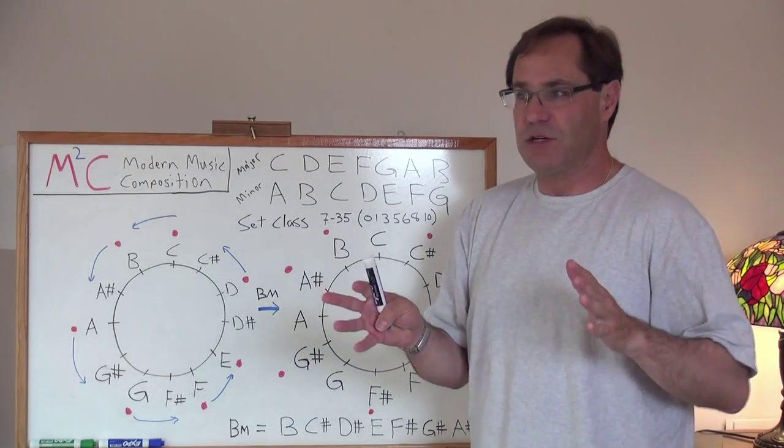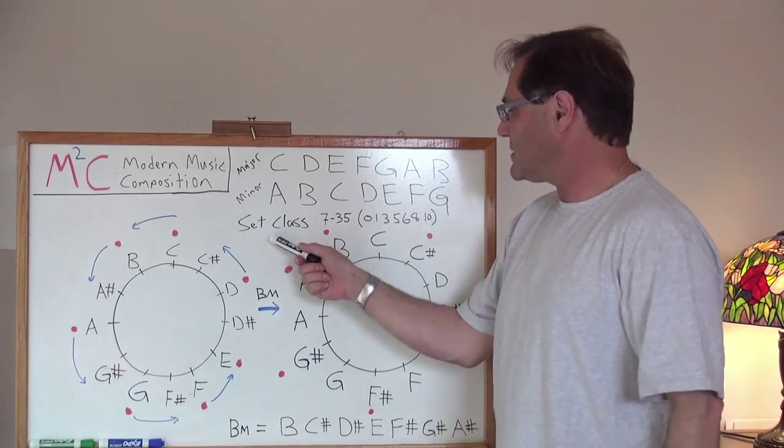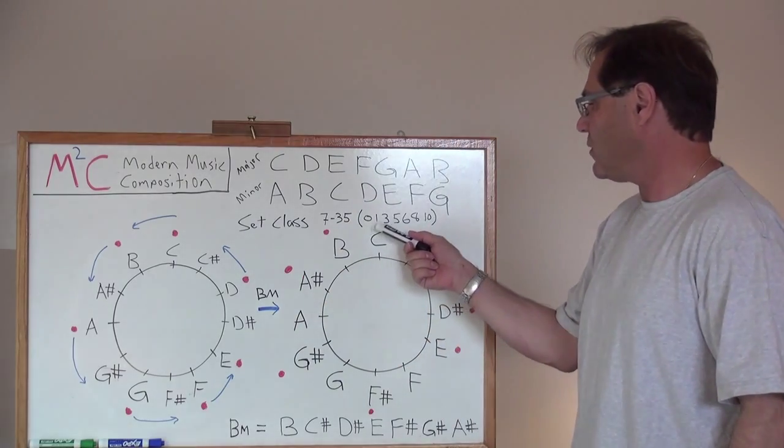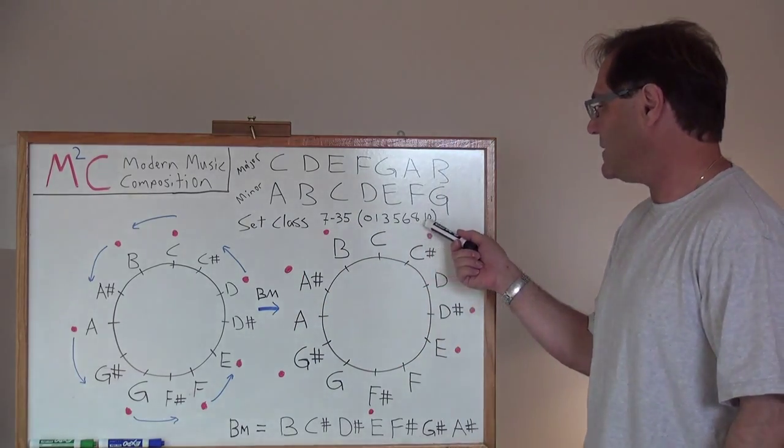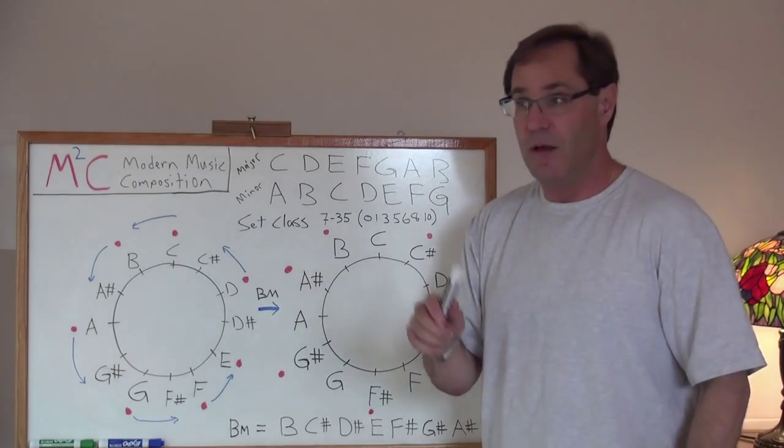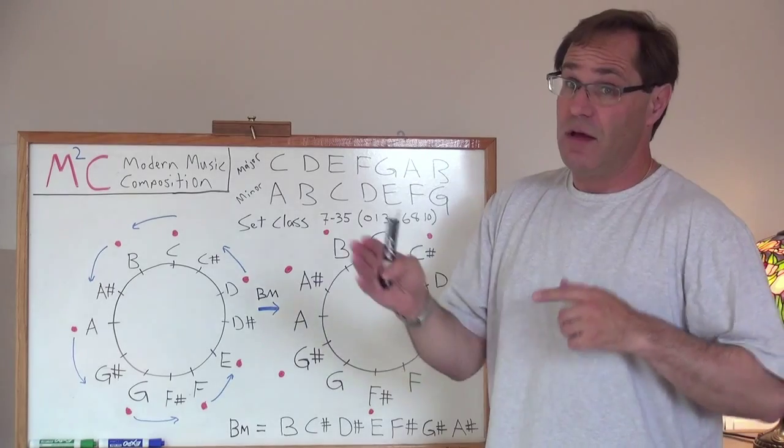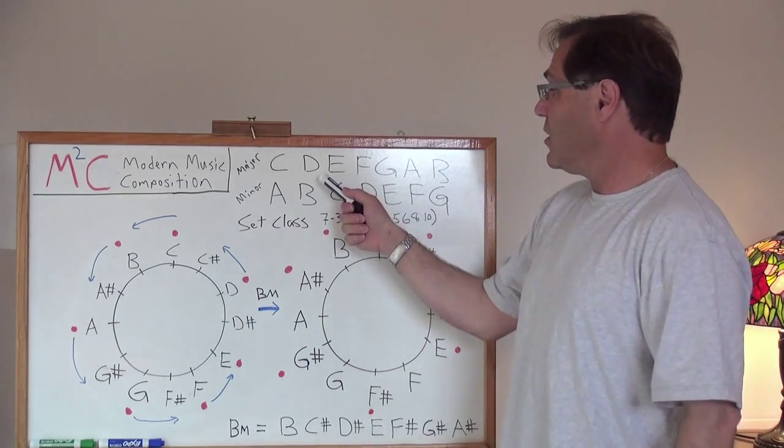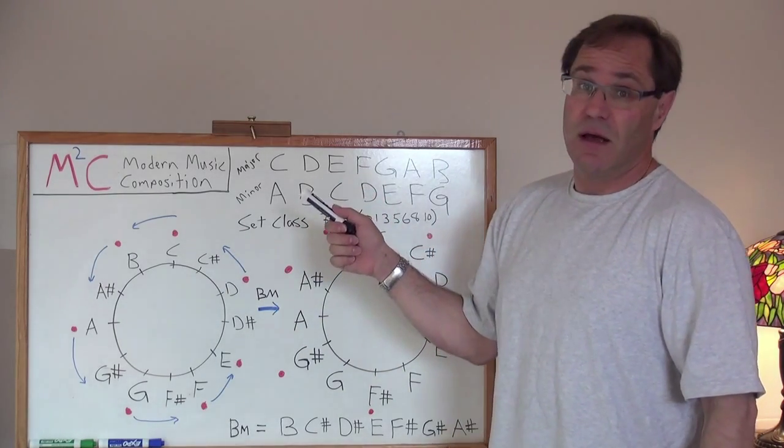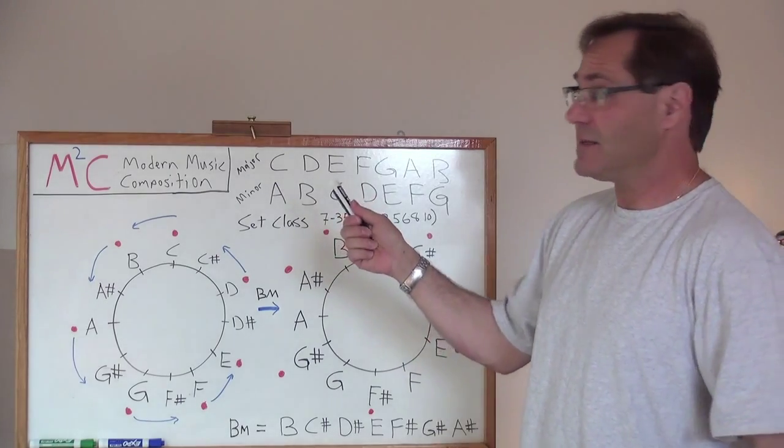So, I didn't want you to get the impression that, for example, set class 735, which is 0, 1, 3, 5, 6, 8, and 10, those particular tones are only associated with those particular notes that I talked about in the last example.